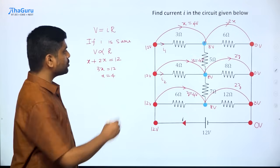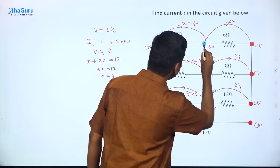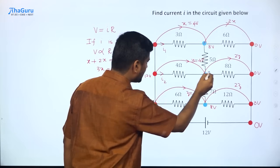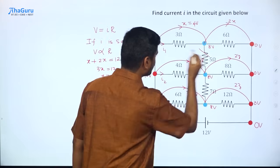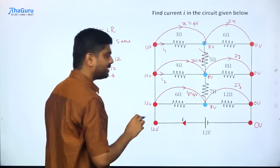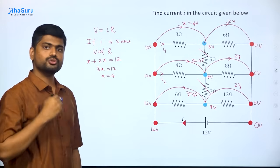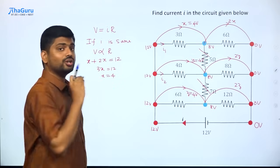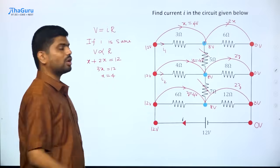Now let's replace those resistors and put them back in place. If you observe carefully, the potential drop across this 5 ohm resistor is 0, because the potential here is 8 and the potential here is also 8. So no current flows through this 5 ohm resistor. Similarly, the potential drop across the 7 ohm resistor is also 0, since the potentials are 8 and 8. So no current flows through the 7 ohm resistor either — it's as good as these two resistors not being there. Let me remove them and clear the board.